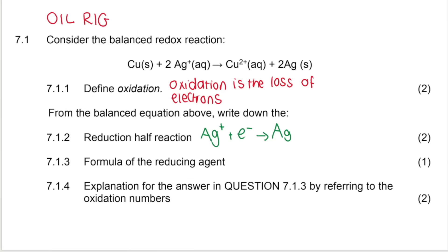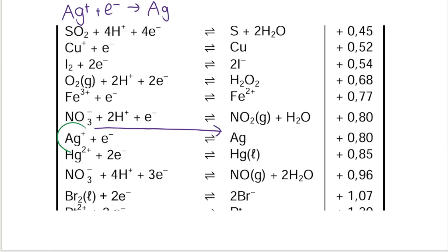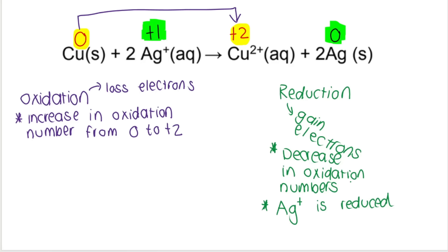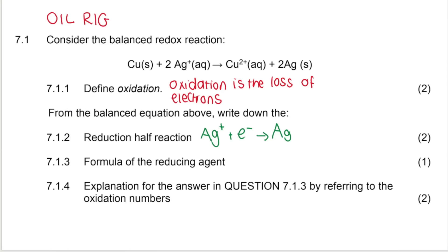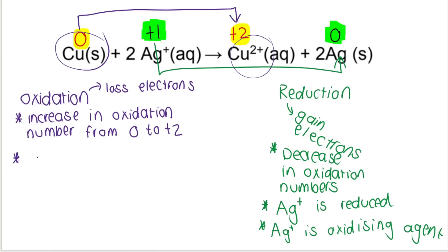Next question: the formula of the reducing agent. As we just mentioned, Ag⁺ is the substance that is reduced — it's the Ag⁺ that is gaining the electron. You can also say that Ag⁺ is the oxidizing agent: if you are reduced, you're the oxidizing agent. Our question asks for the reducing agent. Since the Ag⁺/Ag situation represents reduction and an oxidizing agent, then the other one — copper going to Cu²⁺ — represents oxidation, and therefore the reducing agent. So copper is oxidized, therefore copper is the reducing agent.